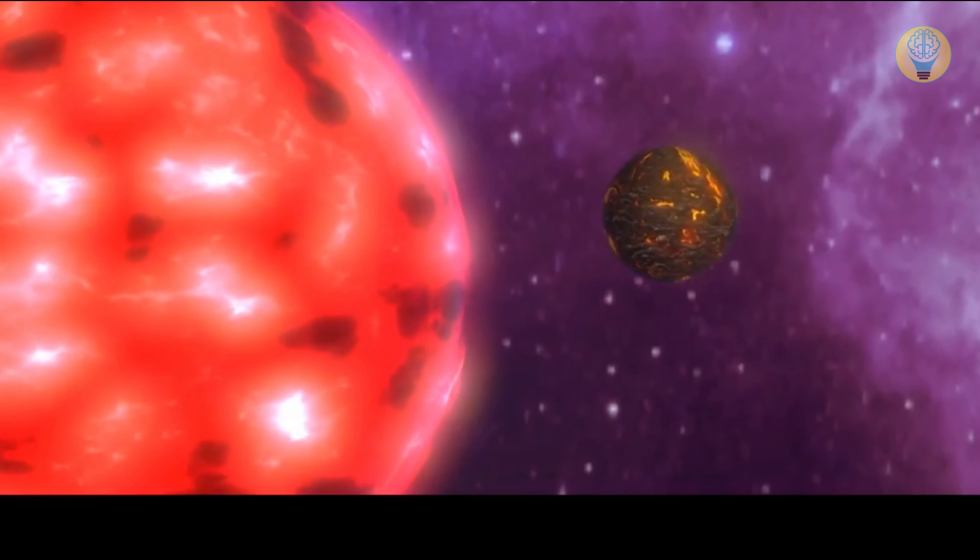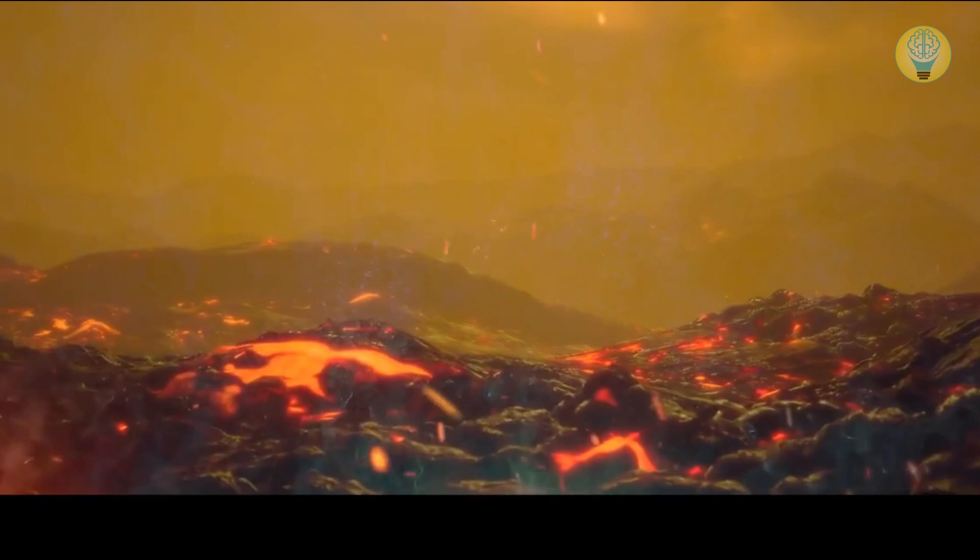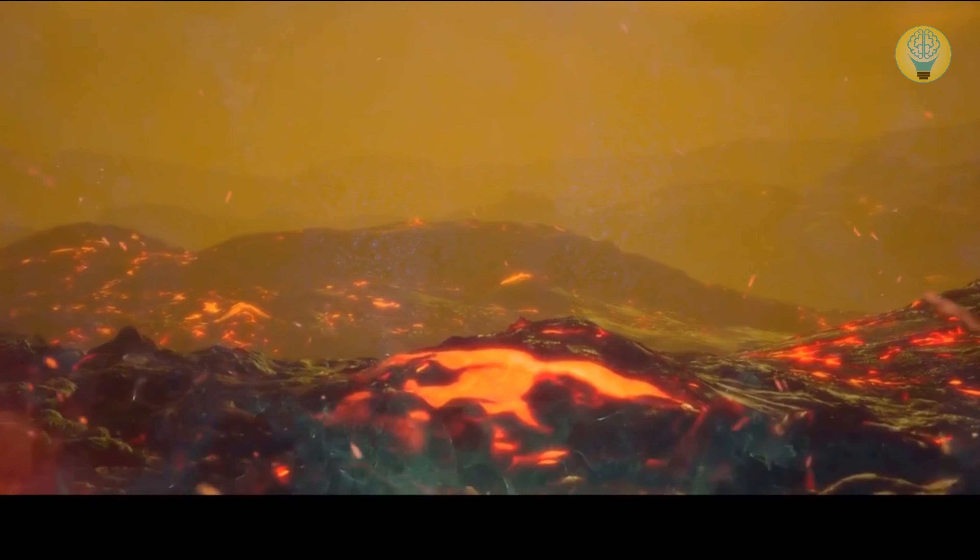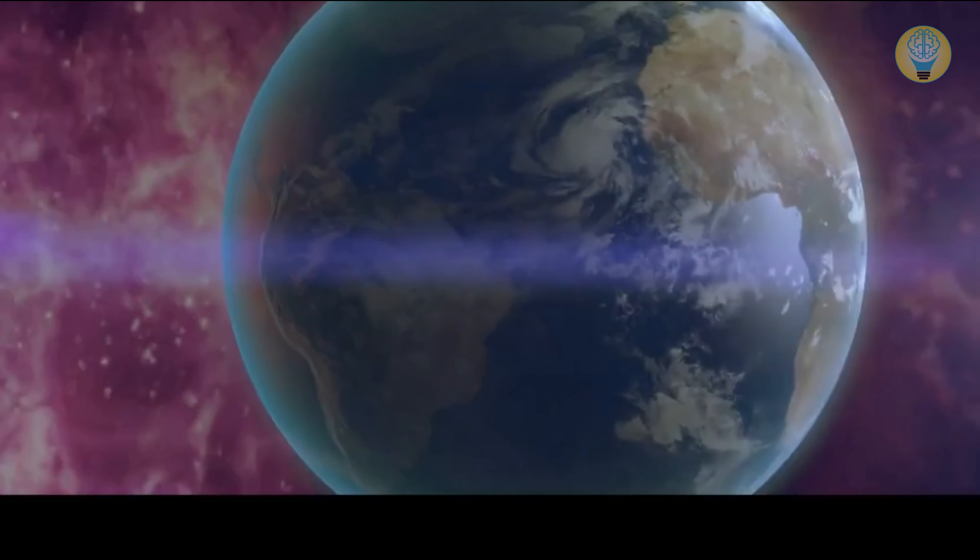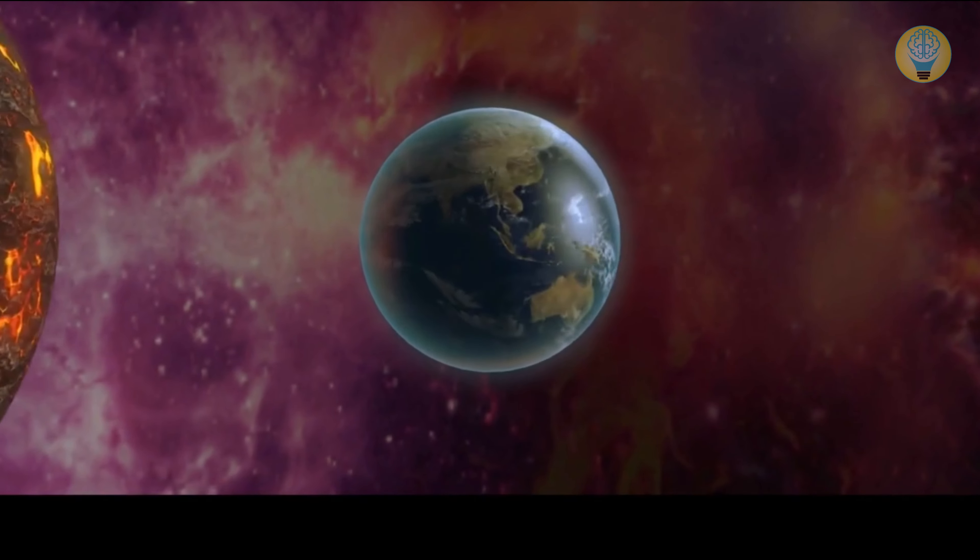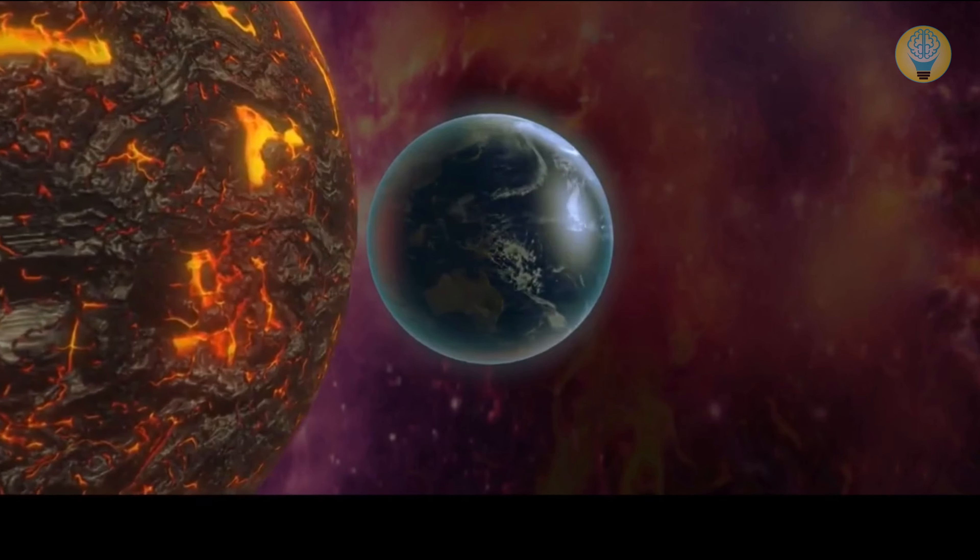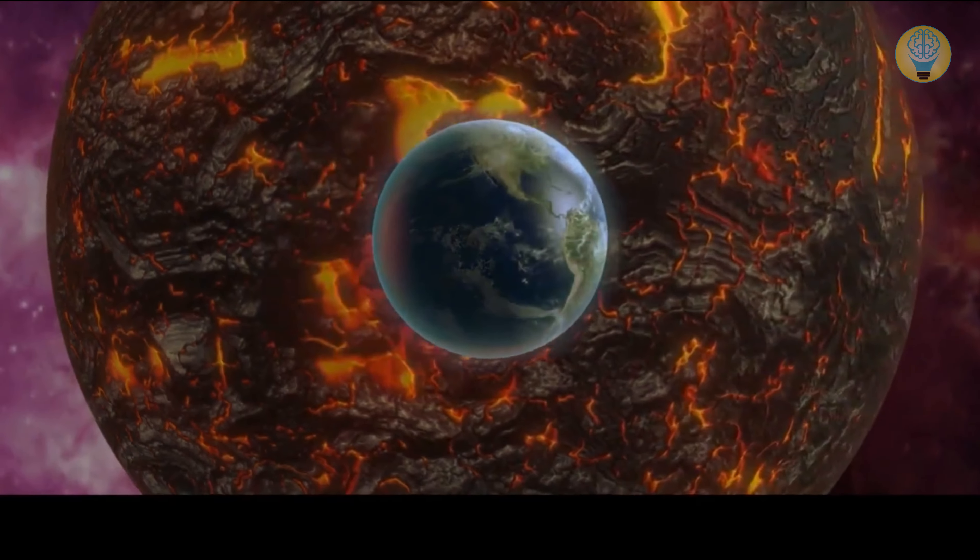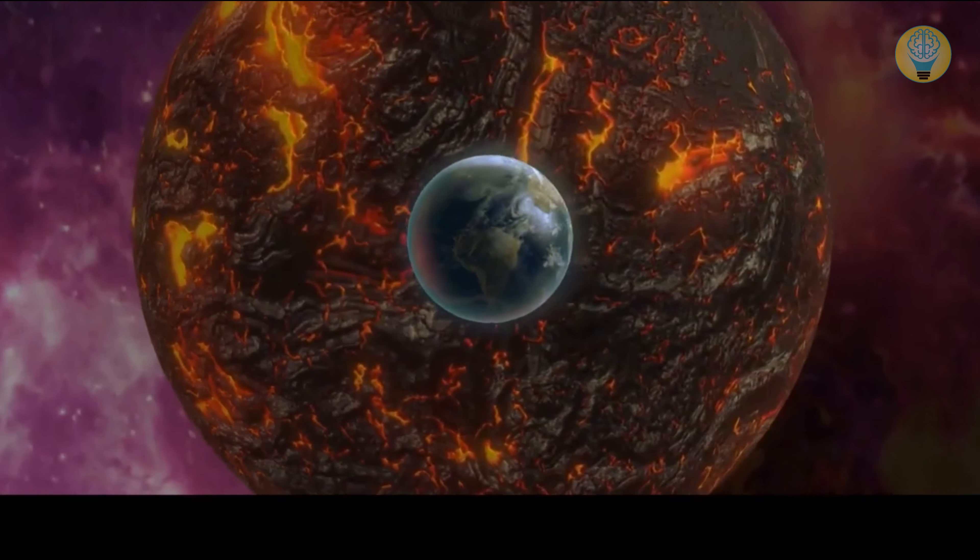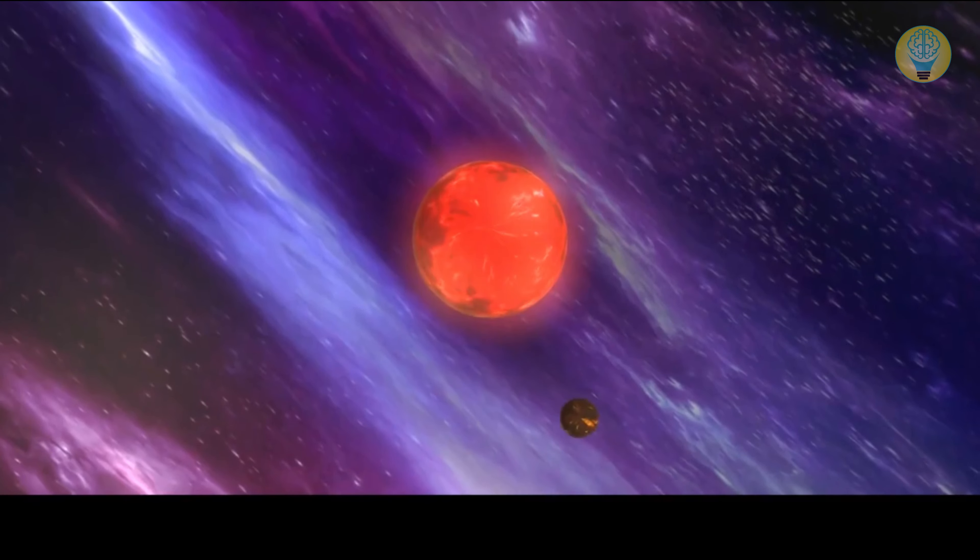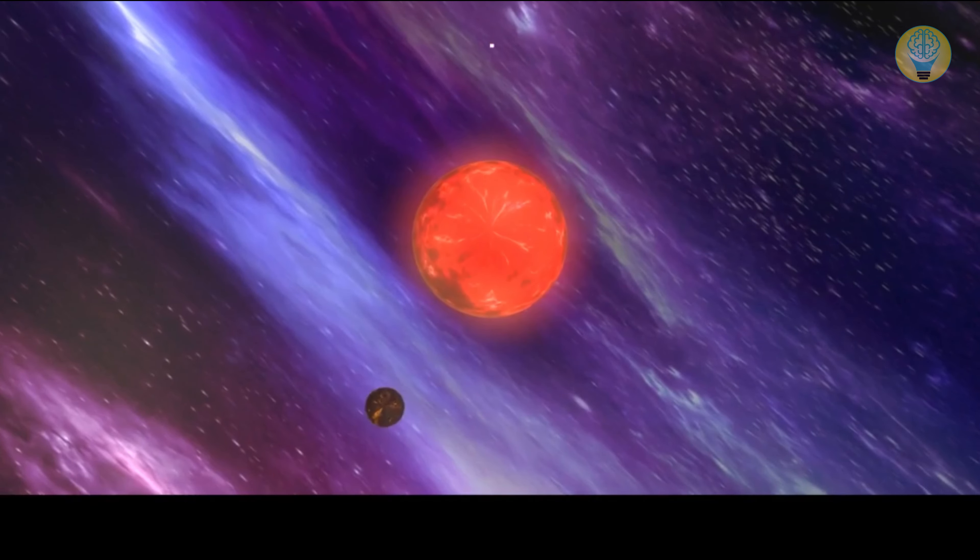Its proximity to its parent star causes its surface to reach scorching temperatures of 1922 degrees. It's so hot that any form of water would evaporate instantly, and the air would be filled with vaporized rocks. But it's not just the heat that's impressive. It's also its size. TOI-1075b is nearly 10 times as massive as Earth, making it one of the most massive super-Earths ever discovered.